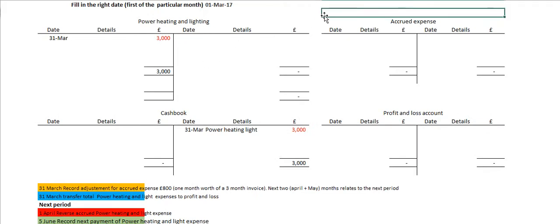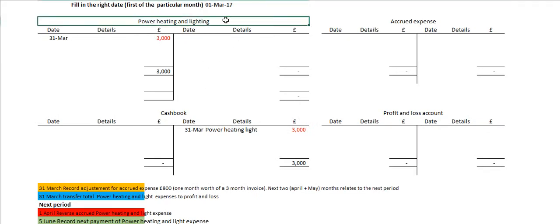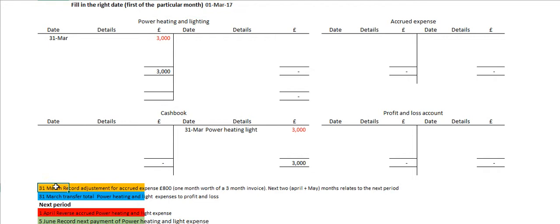We have a power, heating and light expense account. We are at the end of the financial period, which is the 31st of March. What has happened up until this point is that throughout the year we have paid £3,000 in power, heating and light. We can see that's been paid out of the cashbook — normally it would be a range of transactions throughout the year, but I've kept it as one. We can see the double entries there.